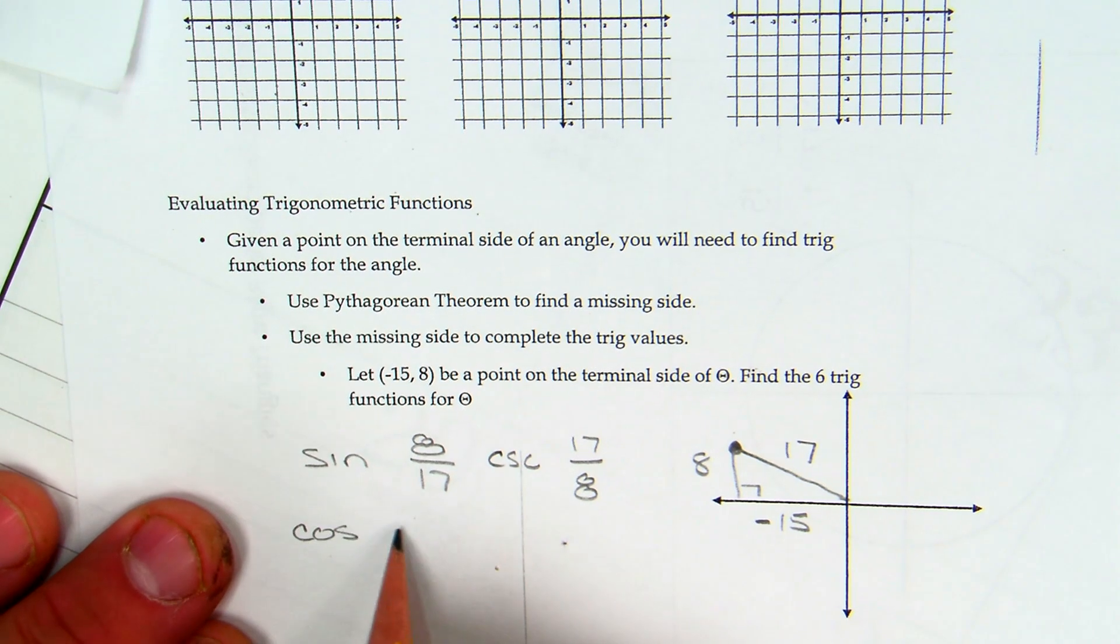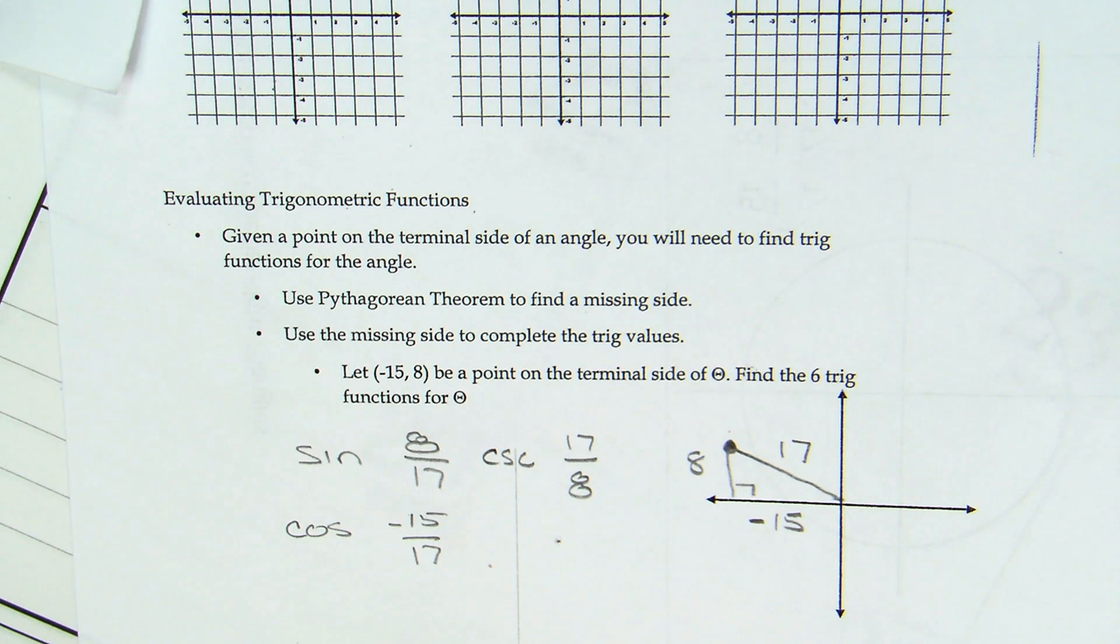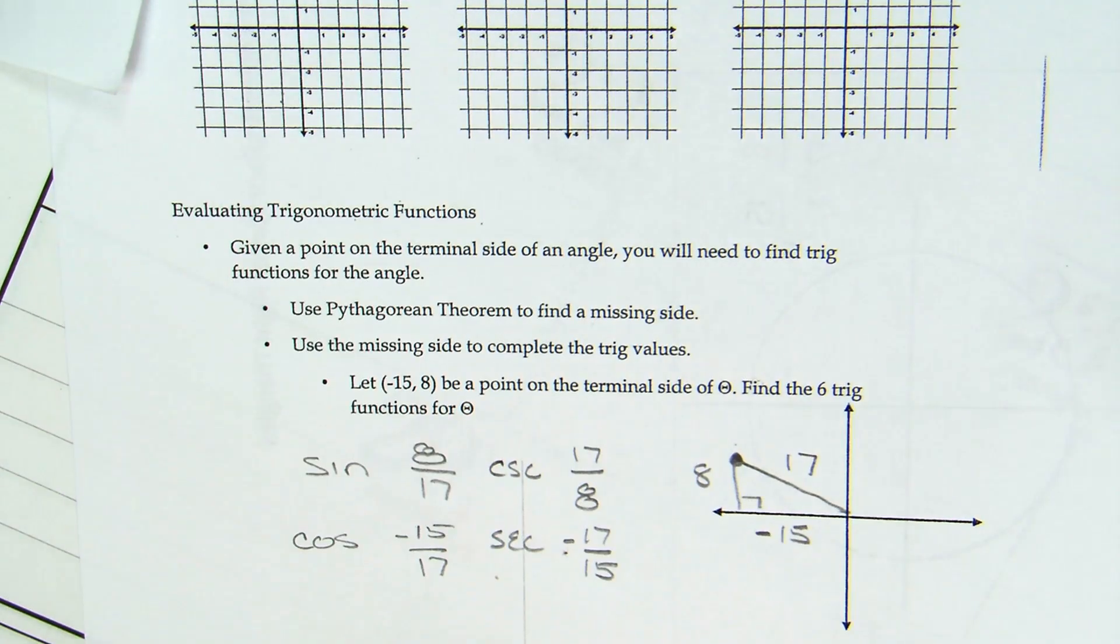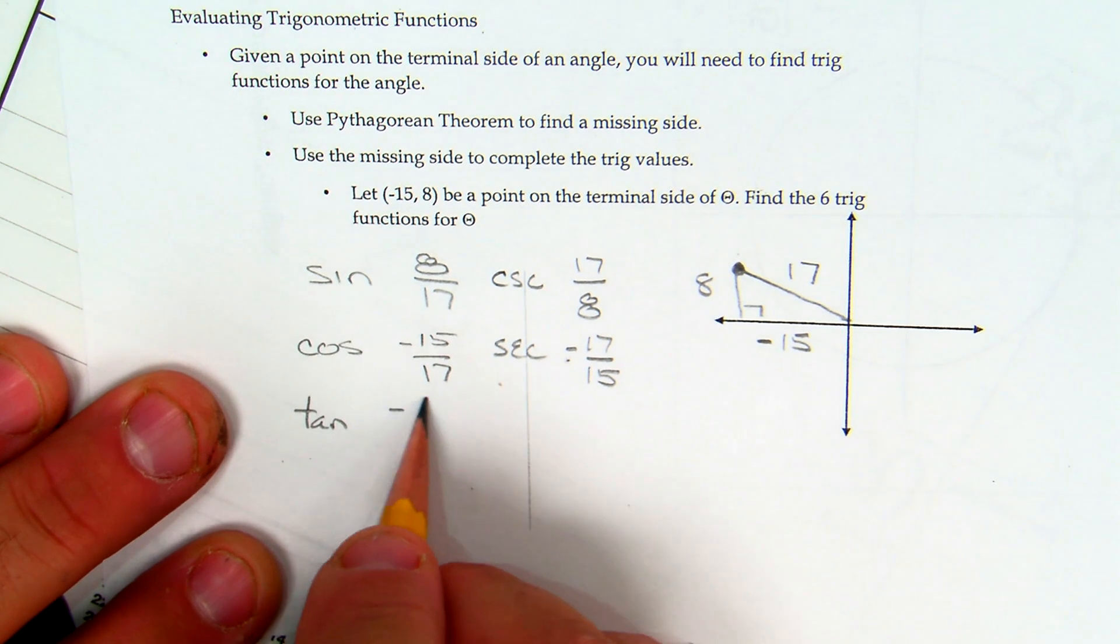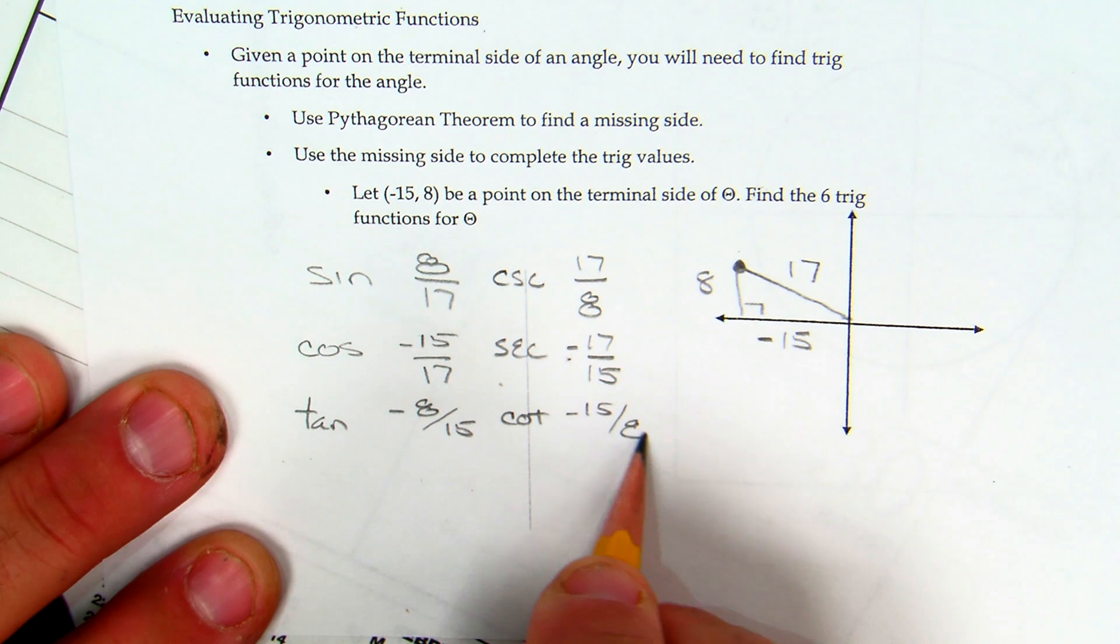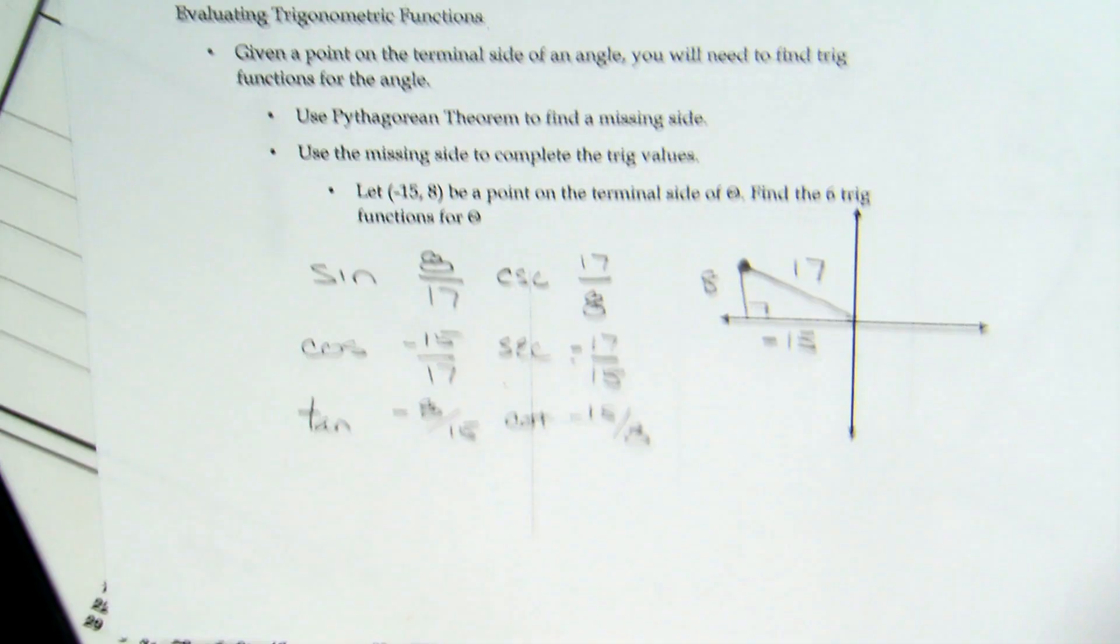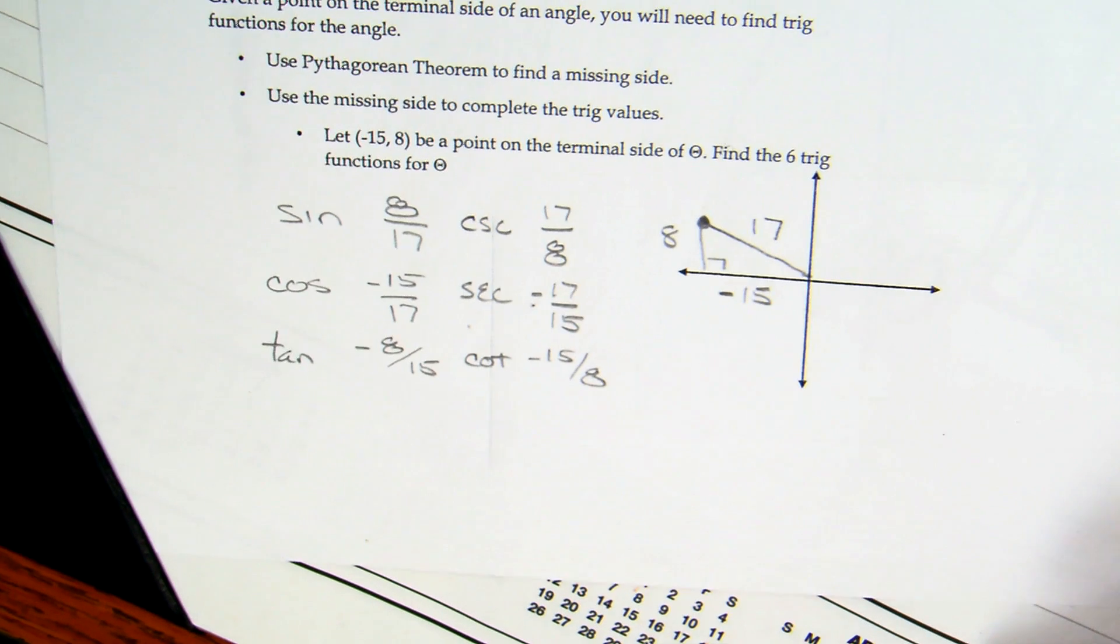So that means cosecant would be seventeen over eight. Cosine, and here's the only new twist, is negative fifteen over seventeen. Which means secant is the flip, which would be negative seventeen over fifteen. Tangent is negative eight over fifteen. Which means cotangent would be negative fifteen over eight. Everybody good with finding the right quadrant? Everybody good with finding the other trig values and the possibility of negative?